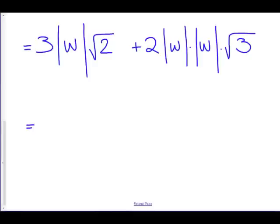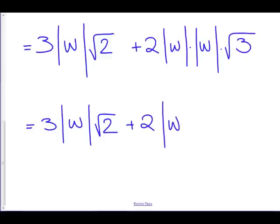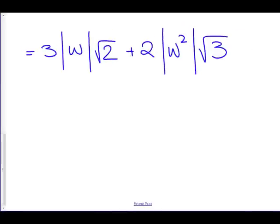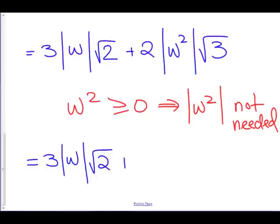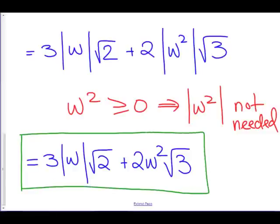Now let's simplify this. We have 3 absolute value of w times the square root of 2, plus 2 times the absolute value of w squared times the square root of 3. Now w squared, that's never going to be negative. That's always going to be positive or equal to 0. And the absolute value doesn't actually do anything to anything that's 0 or positive. So the absolute value of w squared really isn't needed. The absolute value is completely redundant. We don't need it. We can just get rid of it. So here we have 3 times the absolute value of w times the square root of 2, plus 2 w squared times the square root of 3. And that is the final answer. There's nothing else that we can do to this. We can't add it because root 2 and root 3 are not the same. Thank you for watching.